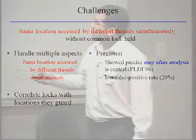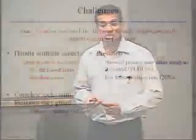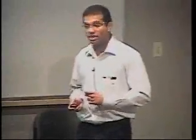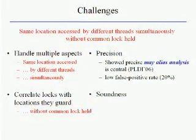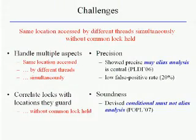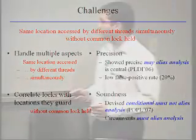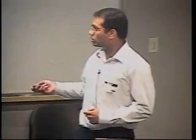Using that, we achieved a low false positive rate of 20%, meaning four out of five pairs we report will turn out to be real races. Another problem is correlating locks with the locations they guard — programmers typically have a mental model of certain locks guarding certain data structures, and we need to infer that correlation. This is primarily a soundness problem. For this, we devised what we call a conditional must-not-alias analysis — a technique we invented, published at POPL this year. The key idea is that it circumvents the need for a must-alias analysis, which is a much harder and less-known field.